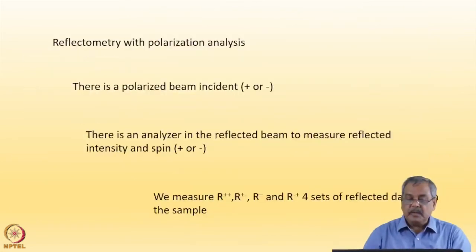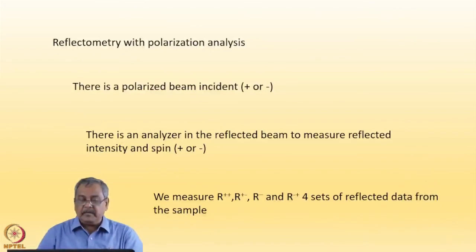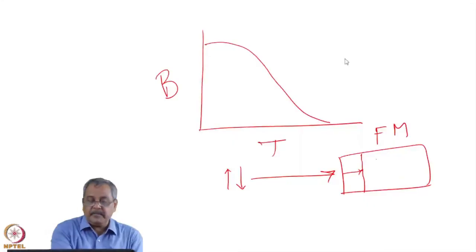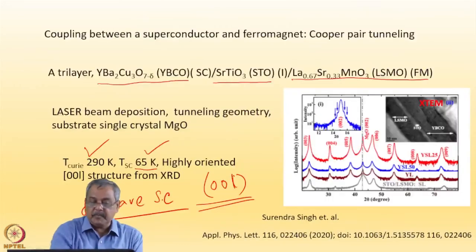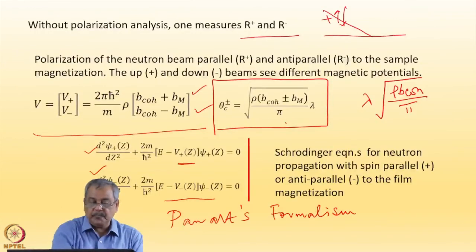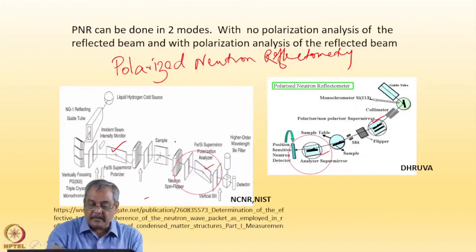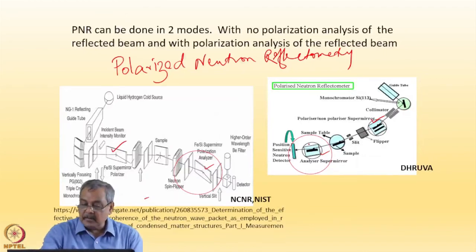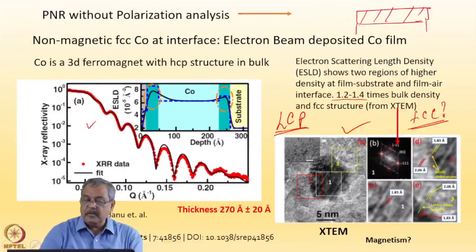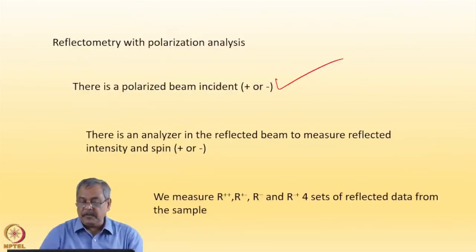There is an incident polarized beam, which is plus or minus, and there is an analyzer in the reflected beam as I showed you in the two experimental setups. You have analyzers here and analyzers here. With this, we can do a polarization analysis of the reflected beam. We can measure R plus plus, R plus minus, R minus minus, and R minus plus. So we have four sets of reflectivity data now.